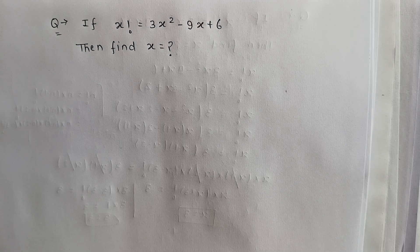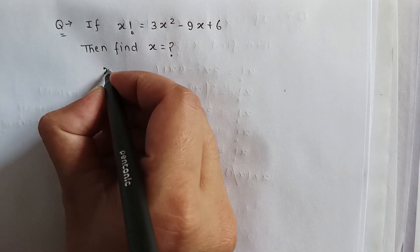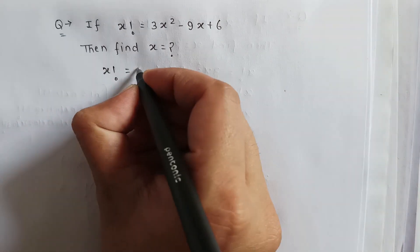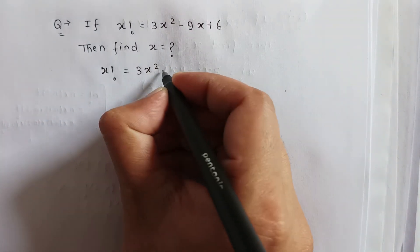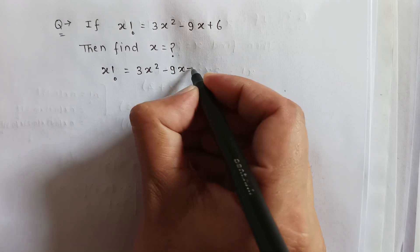Here is a very nice factorial problem: if x factorial is equal to 3x squared minus 9x plus 6, then find the value of x. So here x factorial is equal to 3x squared minus 9x plus 6.